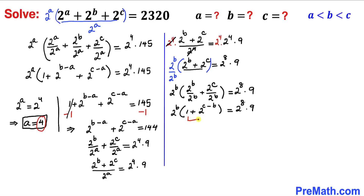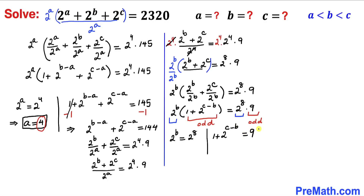Once again, the expression in parentheses is an odd number because we are adding 1, and 9 is also odd. Since 2^b and 2^8 share the same base, comparing them gives 2^b = 2^8, so b = 8. Comparing the odd parts: 1 + 2^(c−b) = 9.